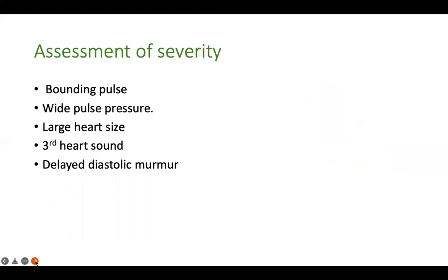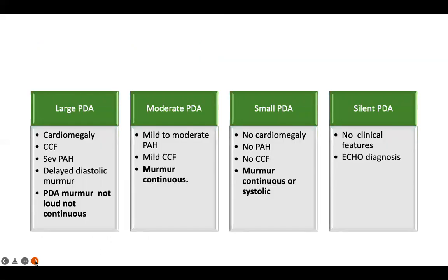To determine if the PDA is big or small: features of CCF, failure to thrive, and recurrent respiratory infections indicate a significant PDA. On examination, bounding pulse due to wide pulse pressure, large heart size, presence of a third heart sound, and delayed diastolic murmur signify a large shunt. Remember, the length of the PDA murmur does not tell you whether it is large or small — in a large PDA the murmur may be short due to PAH, and in a small PDA it may be continuous or just systolic.